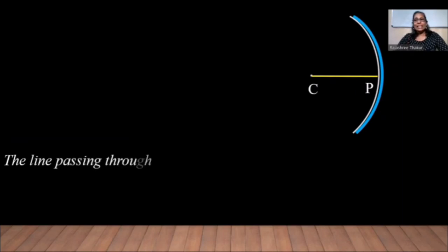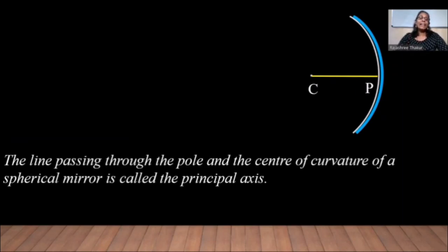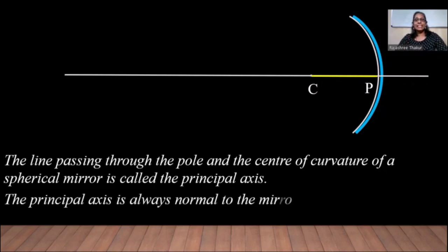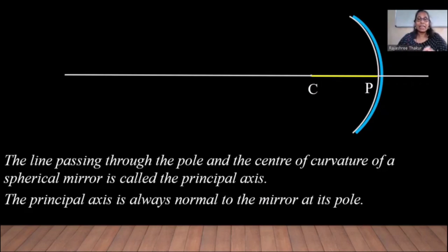The line passing through the pole and the center of curvature of a spherical mirror is called the principal axis. The principal axis is always normal to the mirror at its pole. Now let us enjoy an activity using a concave mirror, a screen, and the sun as the object. You must take utmost care not to look at the sun directly or at its reflected image inside the mirror, as the reflected rays from the mirror may damage your eyes.